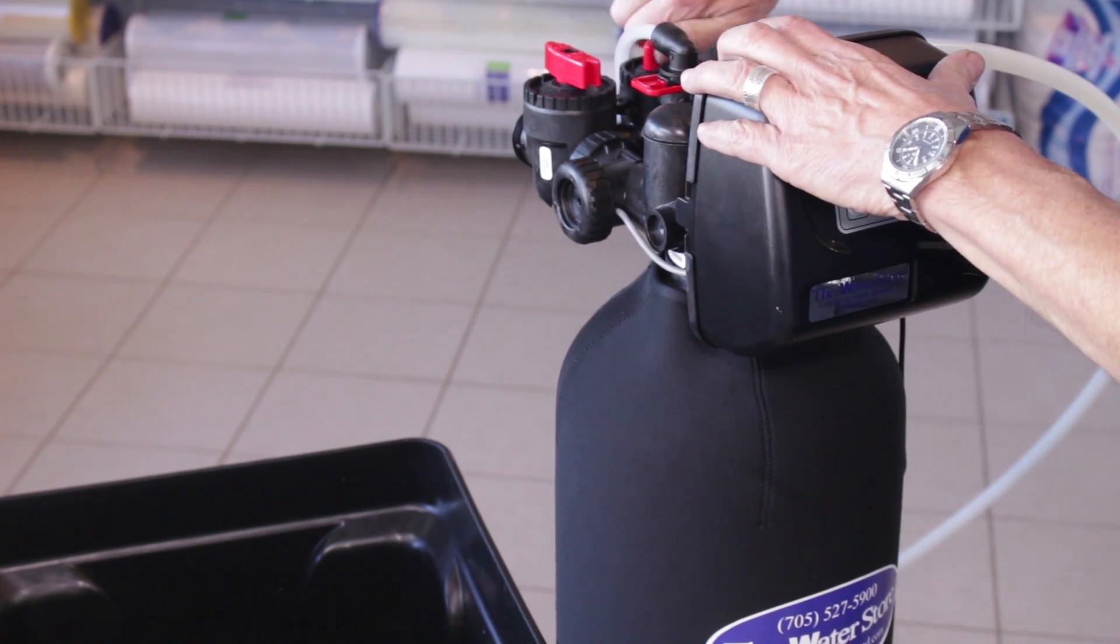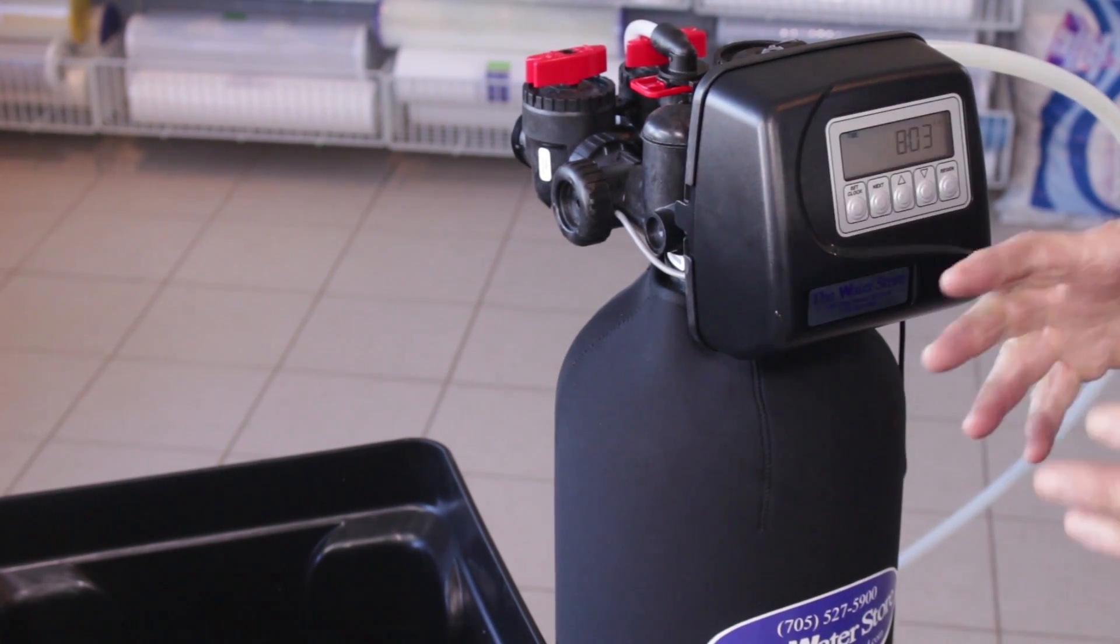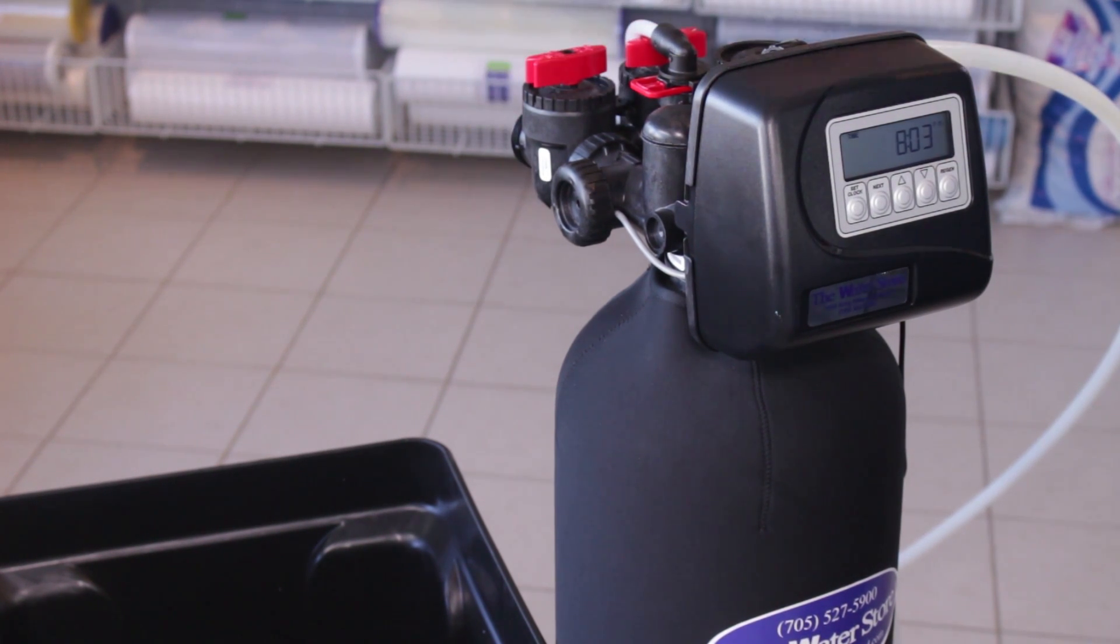So at this point we need to make sure that the water softener is fully bypassed like that. So what we would do now is we turn the water back on and we check for leaks. Make sure there's no leaks for the plumbing coming in and out of here and check all that out.